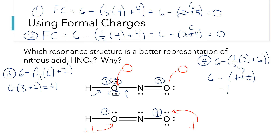So to determine which Lewis dot structure is better, we go with the first structure, not the second, because the second structure has bigger formal charges. The first structure has formal charges of zero, whereas the second structure has formal charges of plus one and minus one. This correlates well with the guideline that oxygen likes to have two bonds — in the second structure, which is not as good, oxygen three actually has three bonds. The formal charge argument, which is quite rigorous, correlates very well with those guidelines, which won't always work but most of the time will.